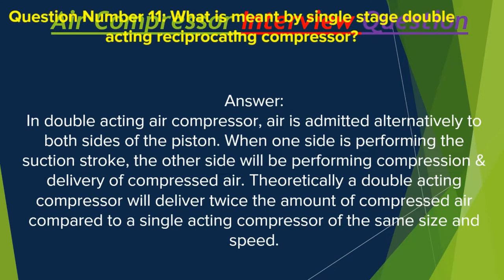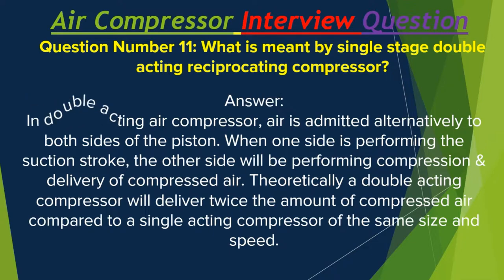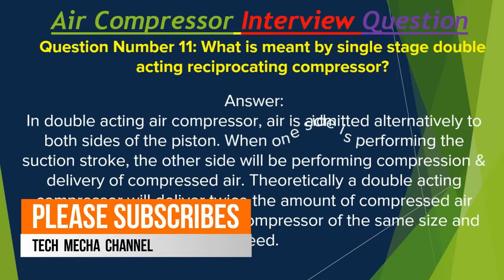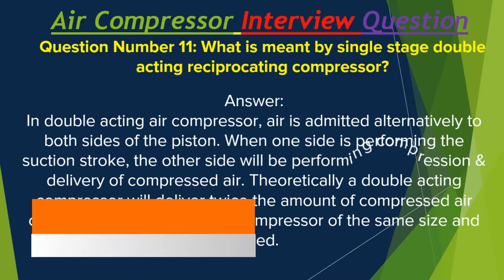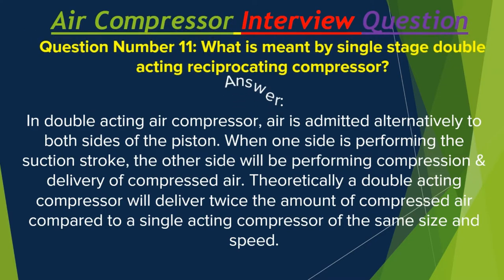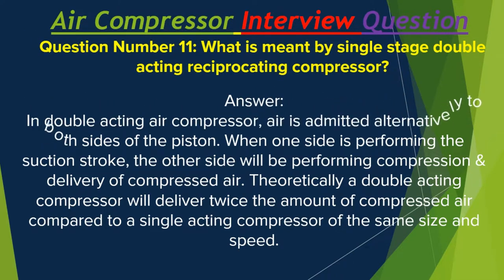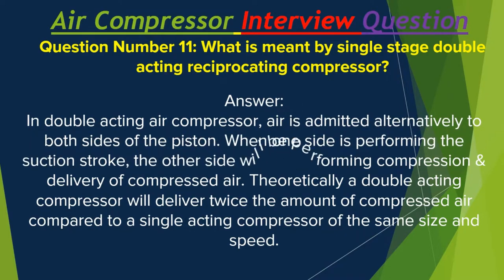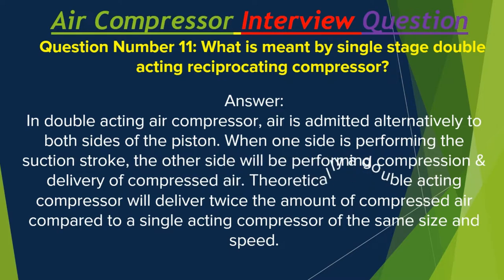Question number 11: What is meant by a single-stage double-acting reciprocating compressor? In a double-acting air compressor, air is admitted alternatively to both sides of the piston. When one side is performing the suction stroke, the other side will be performing compression and delivery of compressed air. Theoretically, a double-acting compressor will deliver twice the amount of compressed air compared to a single-acting compressor of the same size and speed.